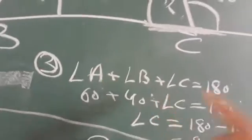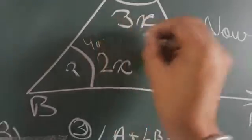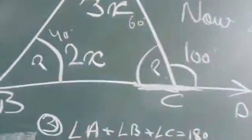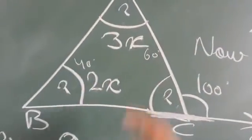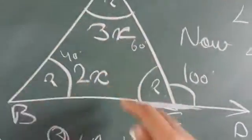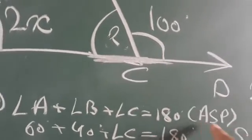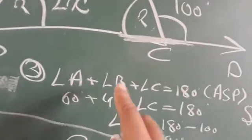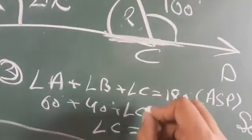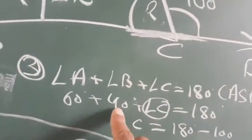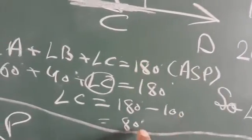Now third angle निकालने के लिए - हमारे पास दोनों angles आ गए हैं: 40 degree और 60 degree। अब C angle निकालना है। हमको पता है triangle के तीनों angles का sum 180 degree होता है due to Angle Sum Property। A = 60°, B = 40°, तो C = 180 - 100 = 80 degree।